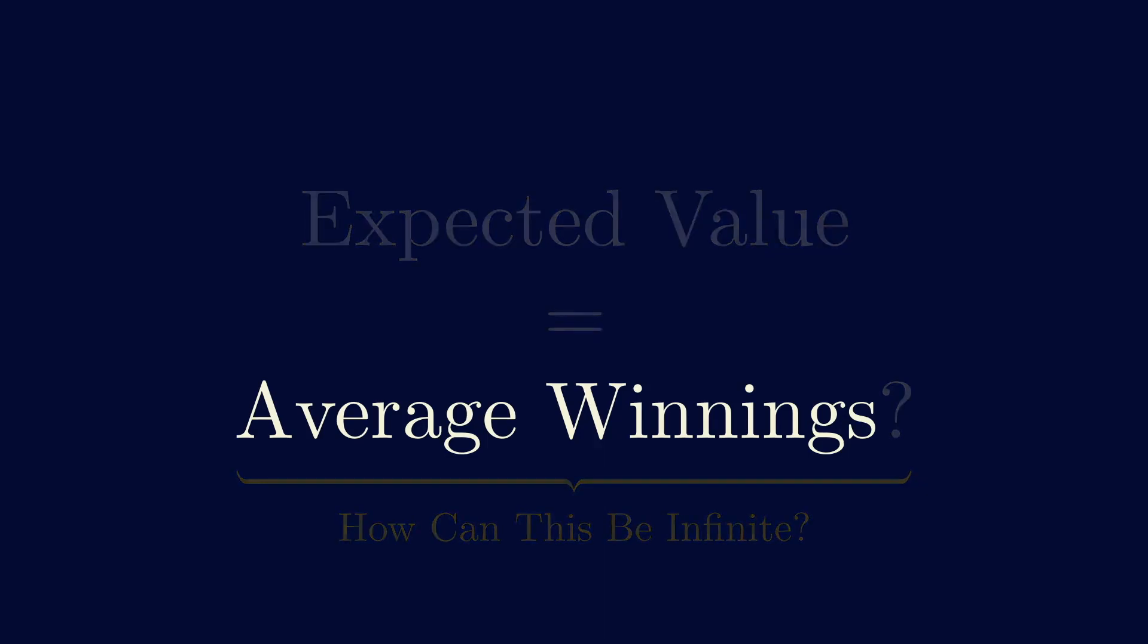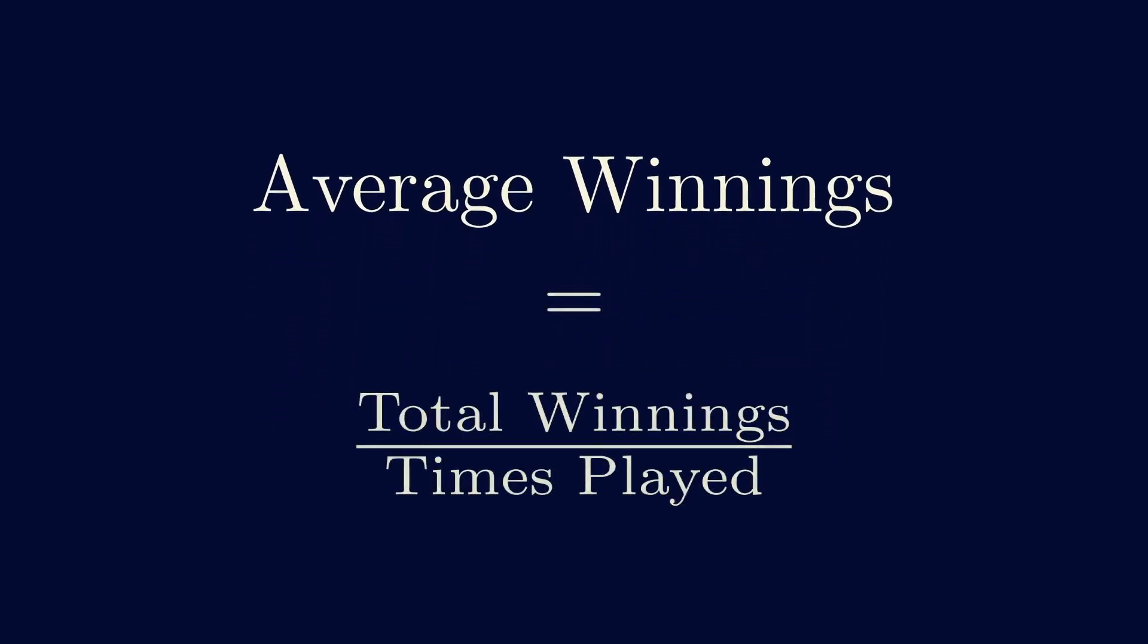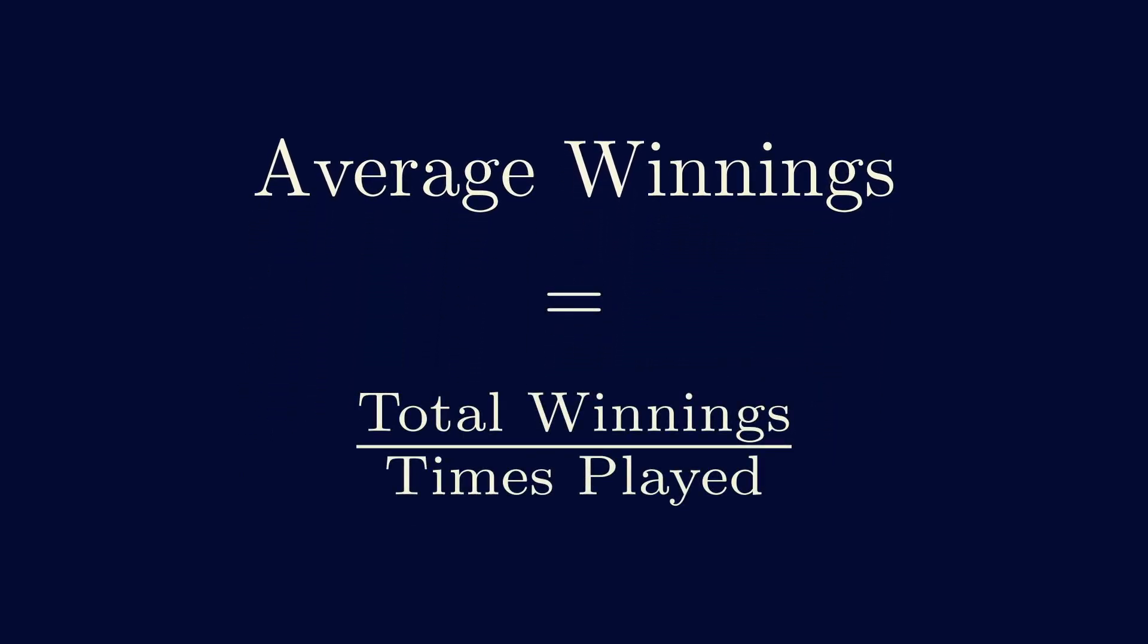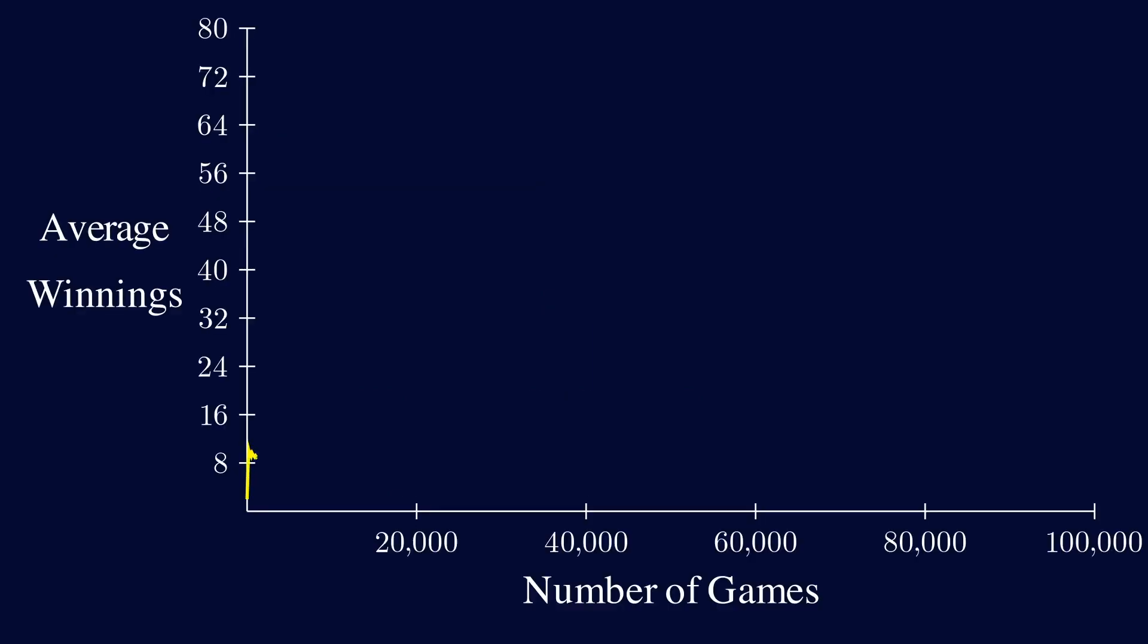After all, average winnings is just the total winnings divided by the number of times we play, and total winnings is a finite number. If we actually plot our average winnings as we play these 100,000 games, you can see that it's not infinite of course, but it does seem to be increasing very slowly over time.